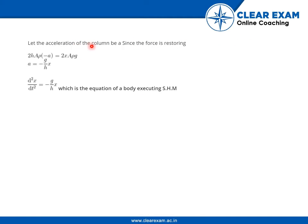Let the acceleration of the column be a. Since the force is restoring, we get 2h·A·rho·(−a) = 2x·A·rho·g. This gives small a equal to minus g over h times x. So the second derivative of x equals minus (g/h)·x, which is the equation of a body executing SHM.